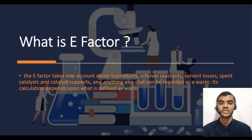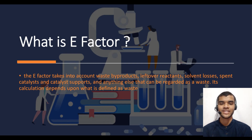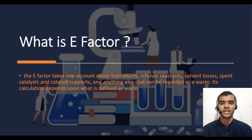Its calculation depends upon what is defined as waste. For example, water is a significant byproduct of many chemical processes and is generally harmless, so its mass is usually omitted from the total mass of waste in the calculation. However, it may be included in those processes where it is severely contaminated and difficult to reclaim in a form pure enough to use or discharge to a publicly owned wastewater treatment facility. So only the reactant that cannot be salvaged is counted in the waste.